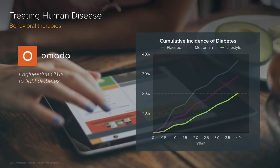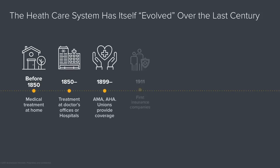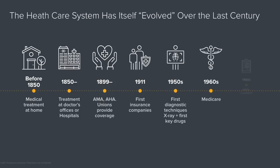Let's step up one more level to the healthcare system. In your spare time, I urge you to read a brief history of the healthcare system — it's amazing. The healthcare system wasn't really designed; it essentially evolved over time, almost like its own biological organism. It started with doctors coming to our houses, then hospitals, unions and the AMA, insurance companies, modern medicine with X-rays and drugs, Medicare, and then newer models like HMOs and capitation. These features came along not from a clean-slate design, but with a lot of technical debt.